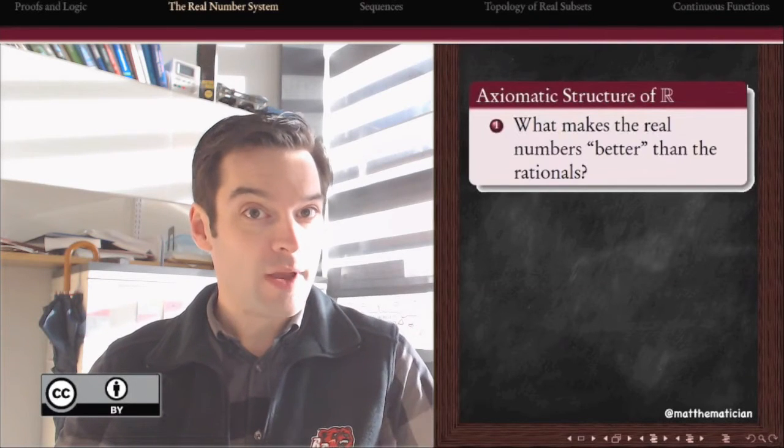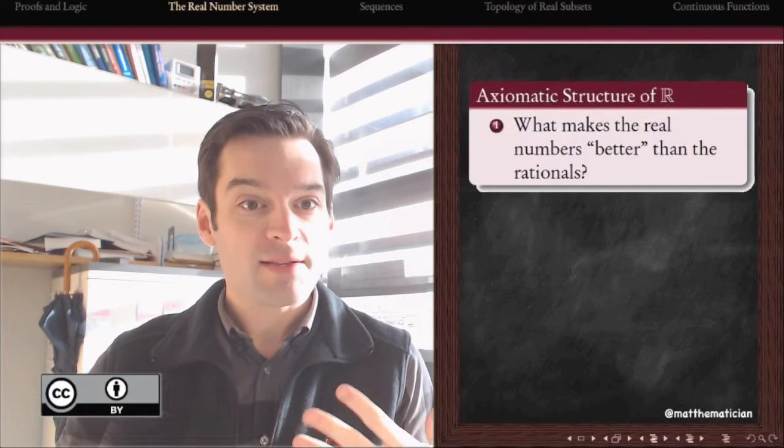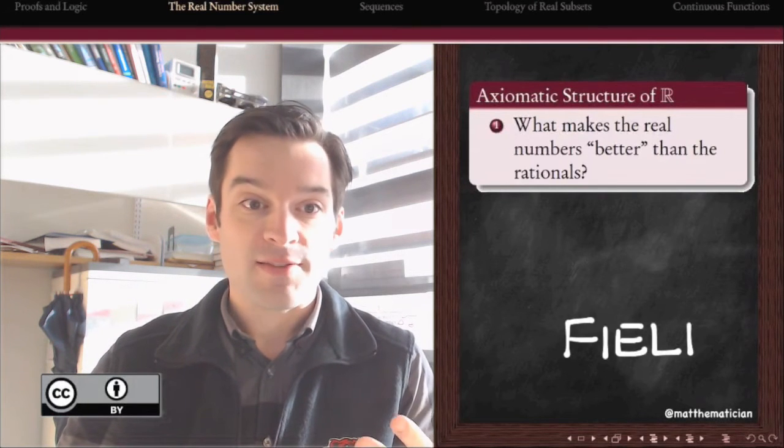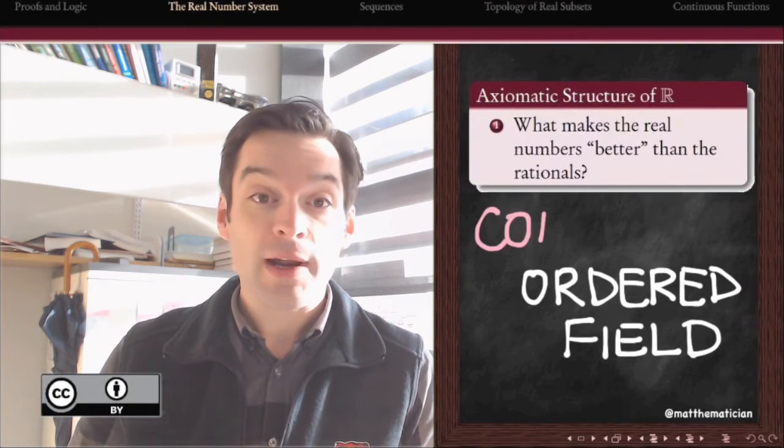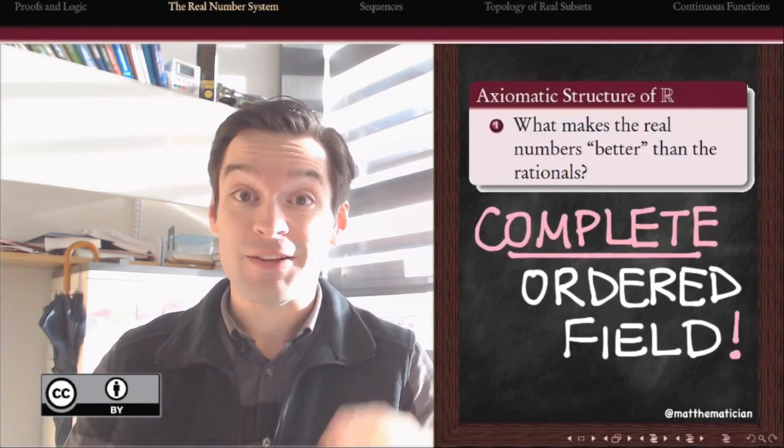So what gives the real numbers their real numberiness? That is, what makes the real numbers special in ways that say the rational numbers are not? We're going to answer that question in three words: complete, ordered, field.